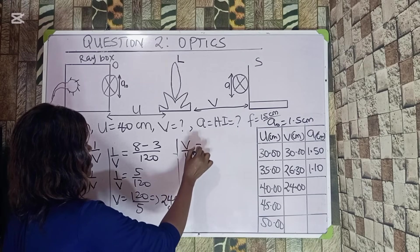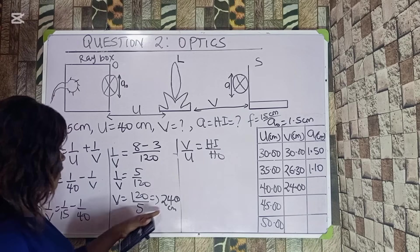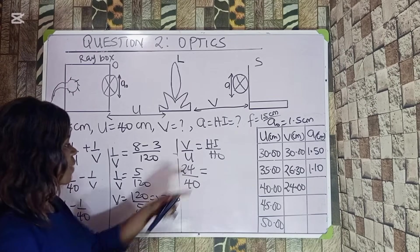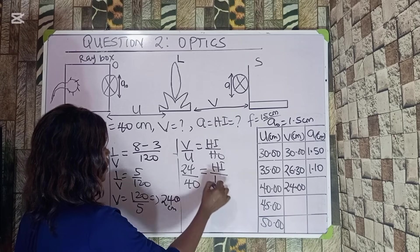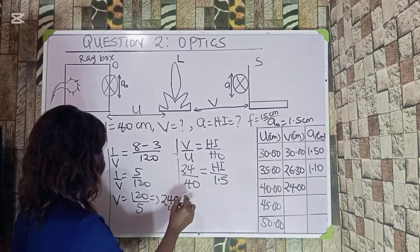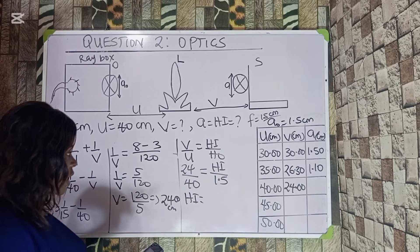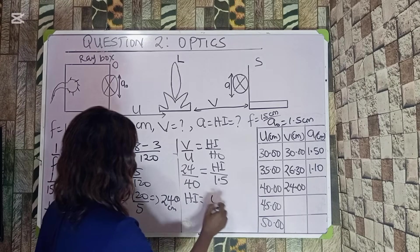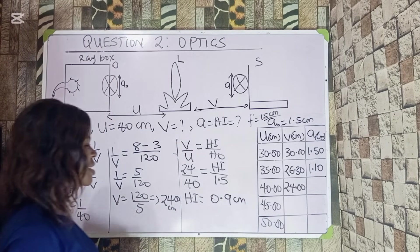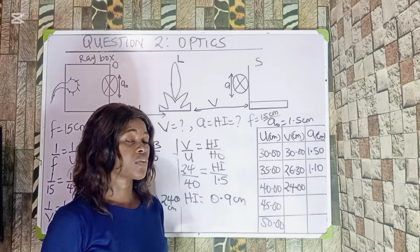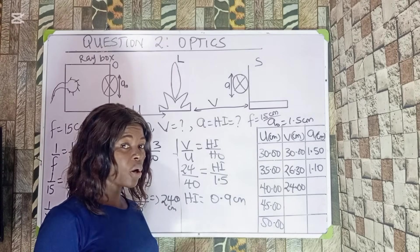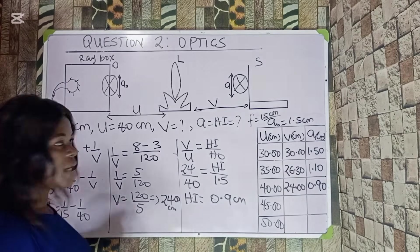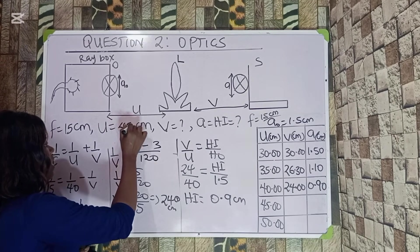For the image size when u = 40 cm: v/u = height of image / height of object, so 24/40 = height of image / 1.5. Cross-multiplying: height of image = 24 × 1.5 / 40 = 0.9 cm. You can see the values are decreasing, which matches what I got when I performed the experiment. Record a = 0.90 cm.